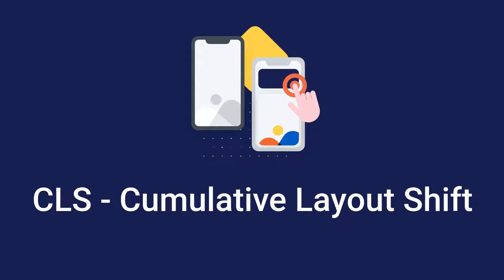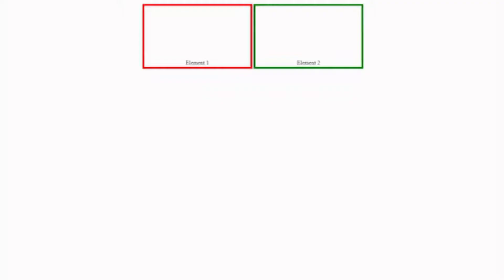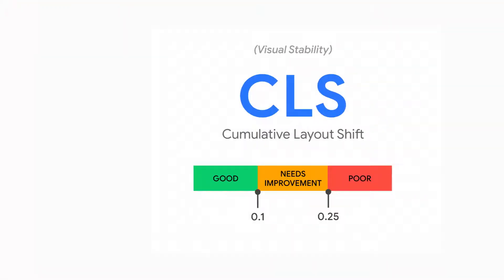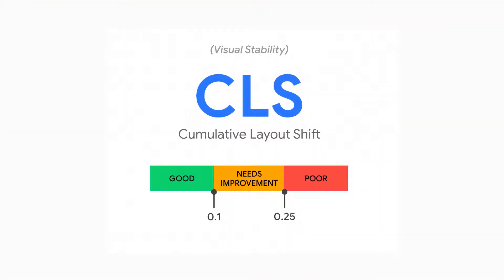Let's start with Cumulative Layout Shift, or CLS. CLS measures how visually stable the page is. Every time the content shifts, it counts as a layout shift. A good CLS score should be equal to or less than 0.1.